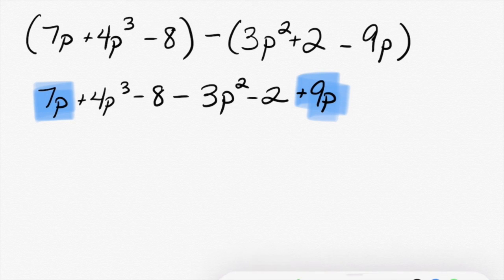Lizzie, can you give me something else I can combine? Four P and three P. Do those have the same degrees? What power is four P raised to? And what's the exponent on three P? Can I combine those? No, because they have different degrees. So, round two, Lizzie. What is something I can combine? Very good. The minus eight and the minus two.